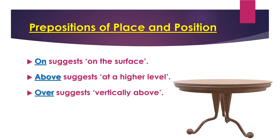The preposition 'over' suggests vertically above — right on the top. Have a look at this picture: the ball is right on the top, absolutely on the top. So that means this ball is over the table.